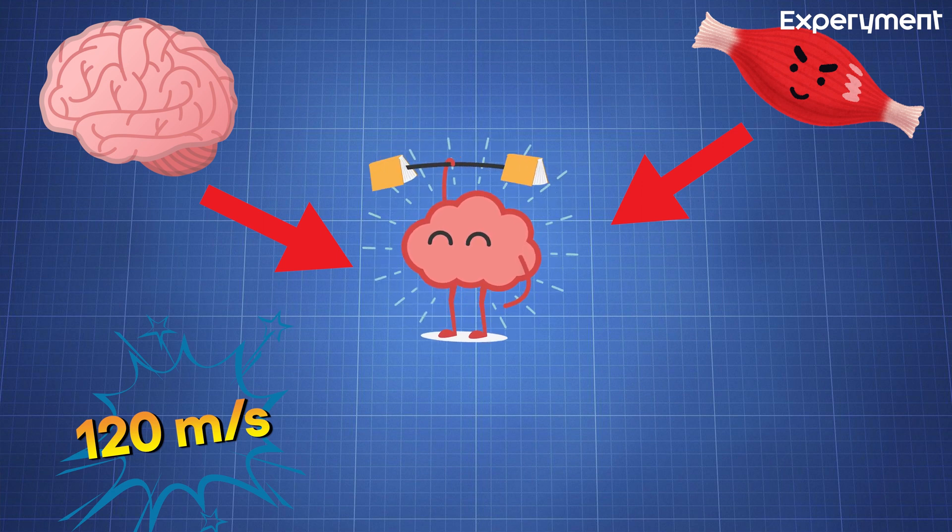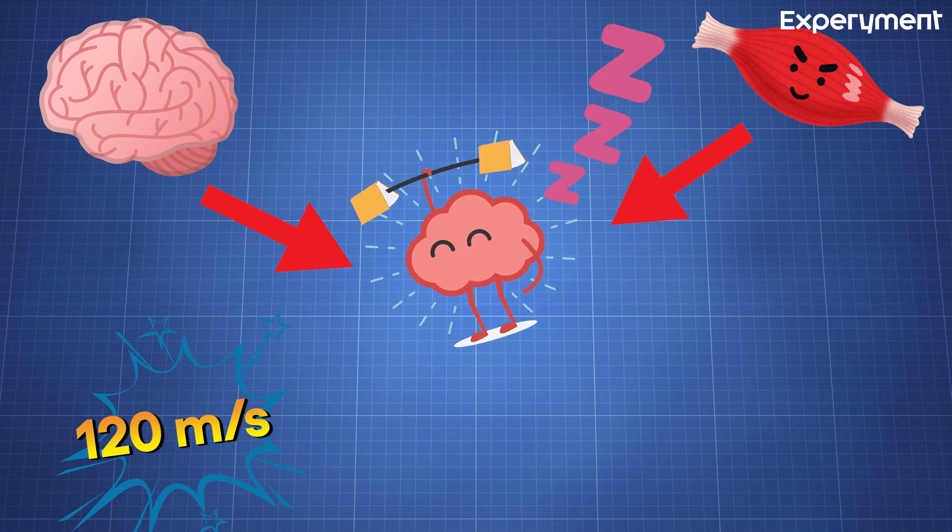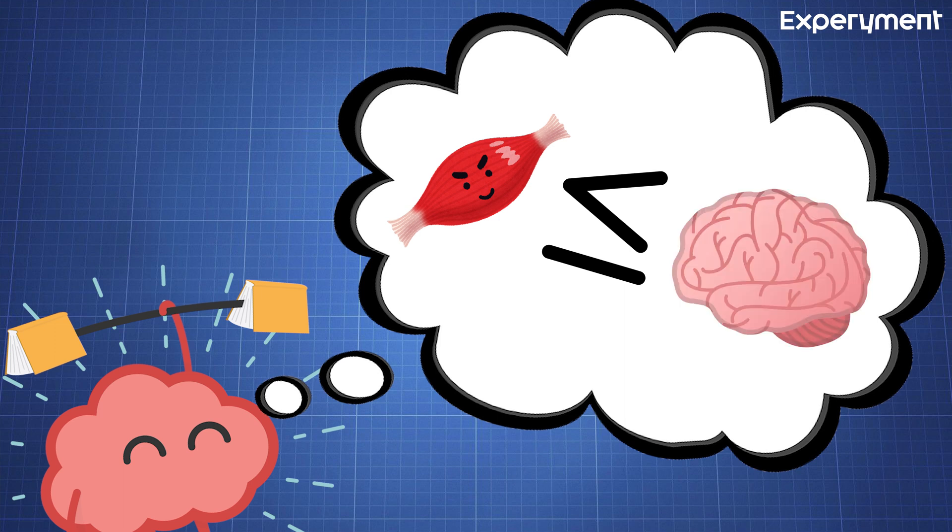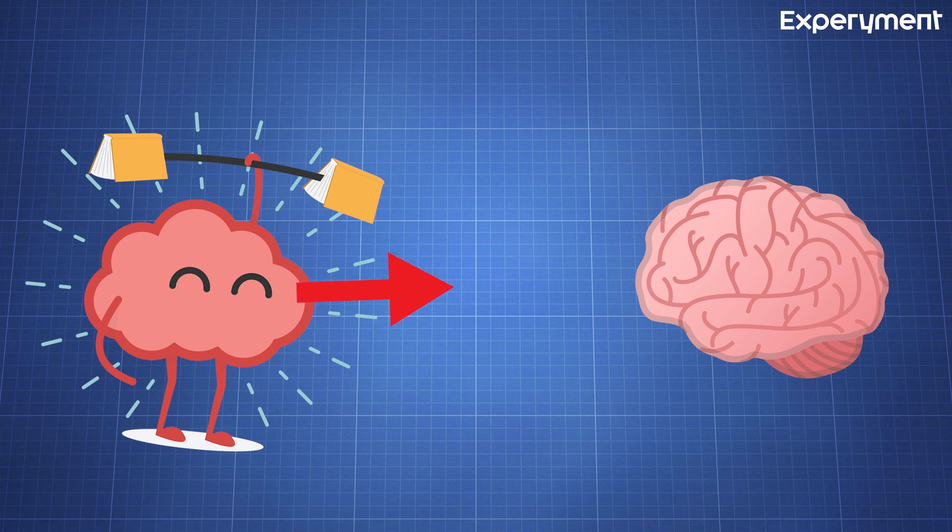The cerebellum continually collects information about the movements and position of all parts of the body, even though it is operating at a subconscious level. Then it compares the actual movements as depicted by the peripheral sensory feedback information with the movements intended by the motor system. If the two do not match, subconscious corrective signals are transmitted back into the motor system to increase or decrease the levels of activation of specific muscles.